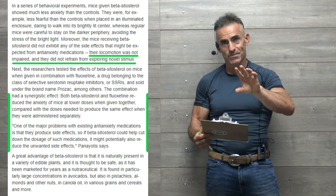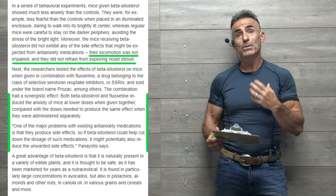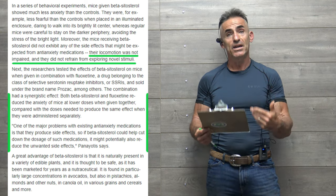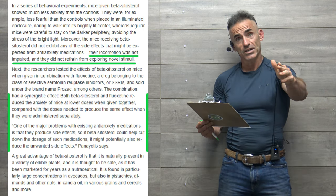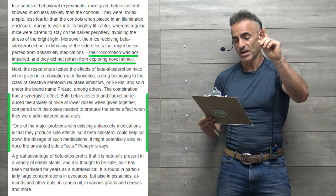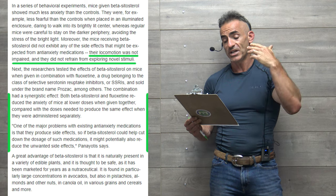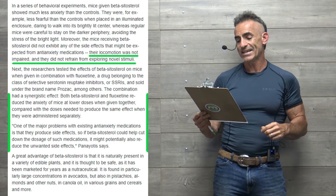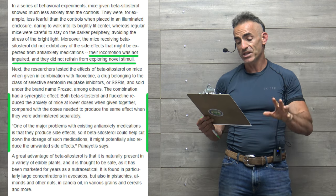Again, beta-sitosterol could work well on its own, but in combination—again, always consult a medical professional before venturing forward—but in combination, at least in the animal model, they were able to reduce the amount of fluoxetine down quite substantially, yet achieve that antidepressant anti-anxiety effect without as much side effects, compared with the doses needed to produce the same effect when they were administered separately.